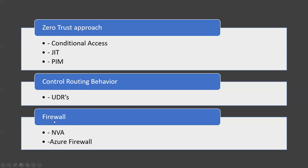Now let's talk about firewalling. NSGs and UDRs can provide a certain measure of network security at the network and transport layers of the OSI model, but in some situations you need to enable security at higher levels of the stack. In such cases, we recommend that you deploy virtual network security appliances or Azure Firewall. These appliances or Azure Firewall Premium can deliver better security than what network-level controls provide — options include IDS, IPS, vulnerability management, application control, network-based anomaly detection, web filtering, antivirus, and botnet protection.